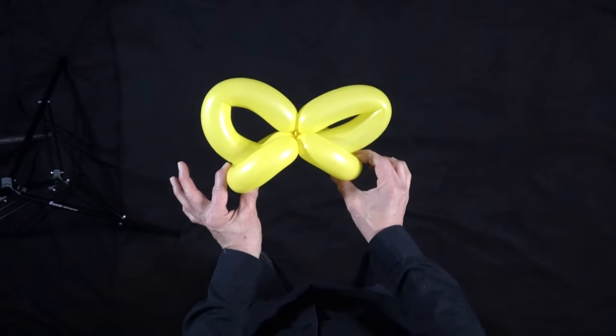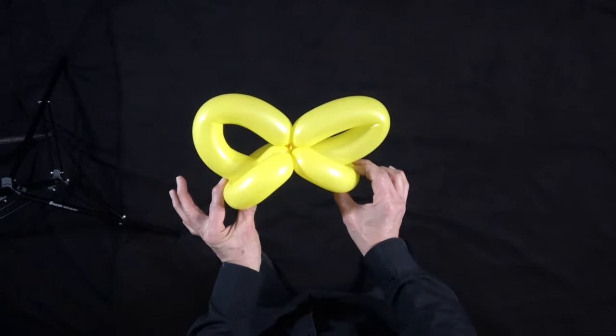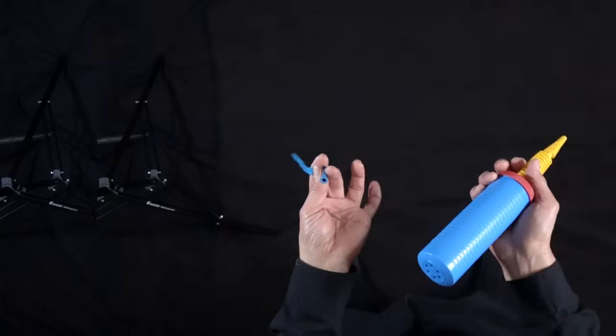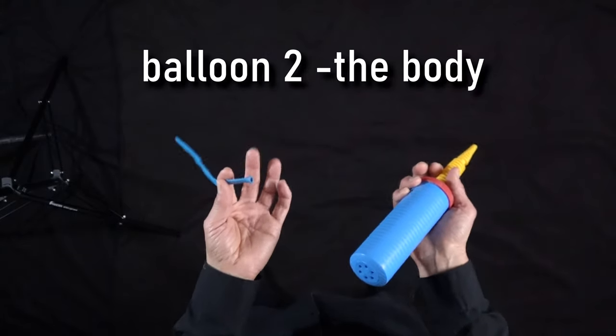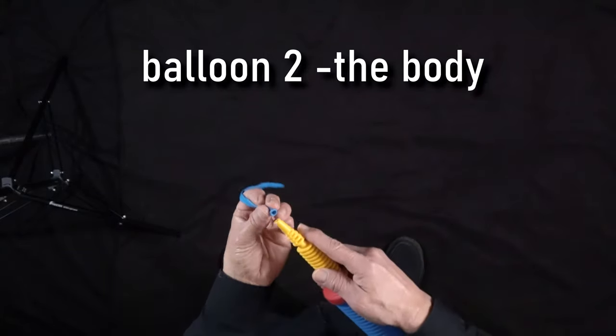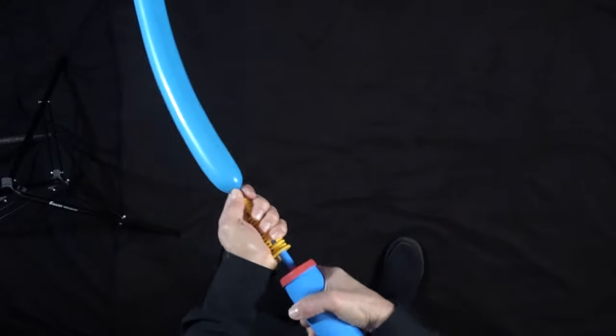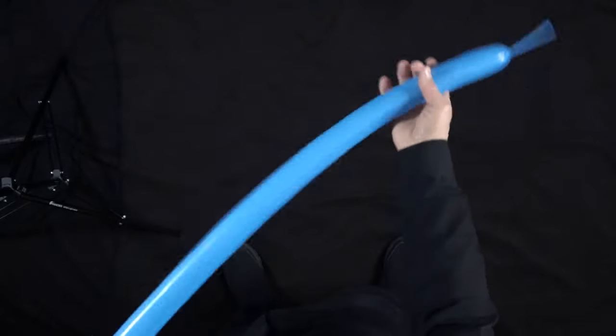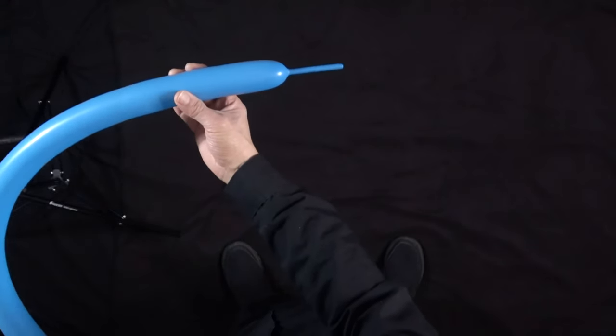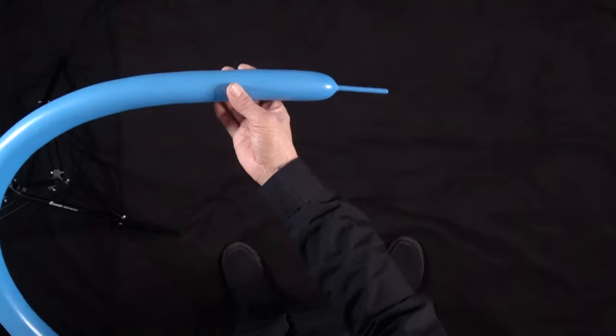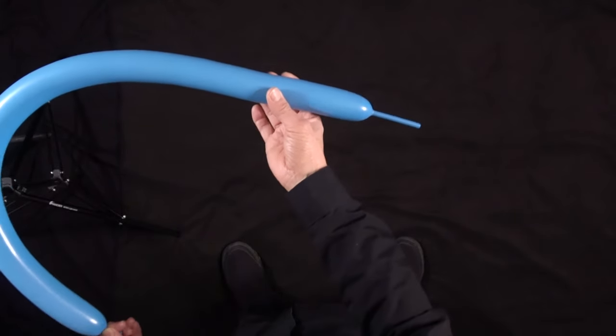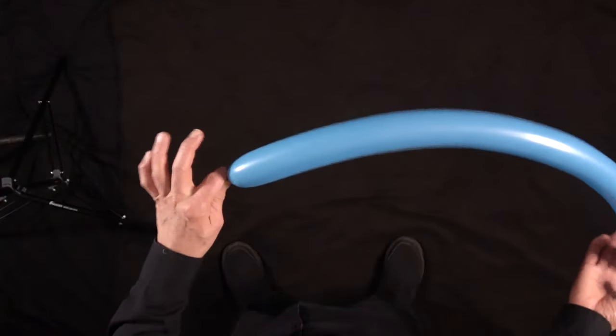Now let's get our second balloon and we will add it to our butterfly. You've got your second balloon now. The inflation on this is not crucial. As you can see, I've left maybe about three or four inches. Doesn't really matter because it's not crucial and you're only going to make a few twists. So tie it off.